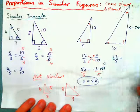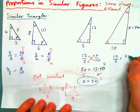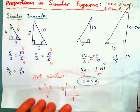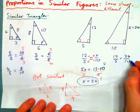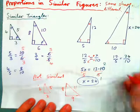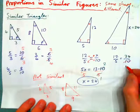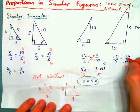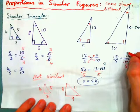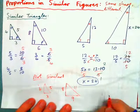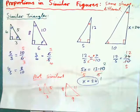Check the original equation: 12 over 5 should equal 24 over 10. 2 into 10 goes 5 times, 2 into 24 goes 12 times — correct.